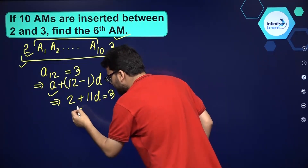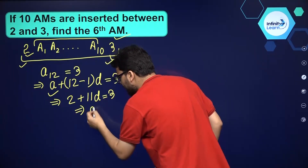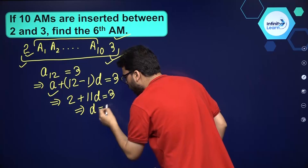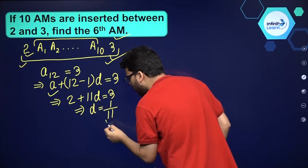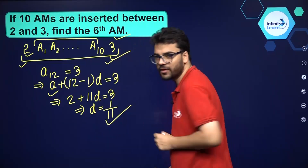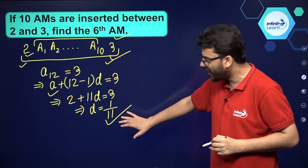If you solve this, you will get D is equal to 1 by 11. So the common difference is 1 by 11.